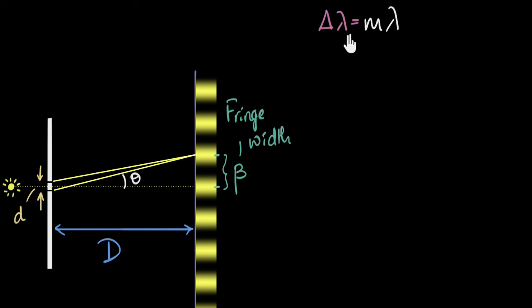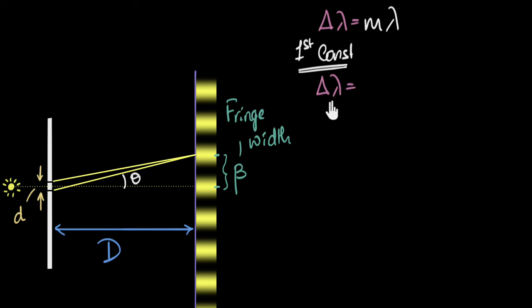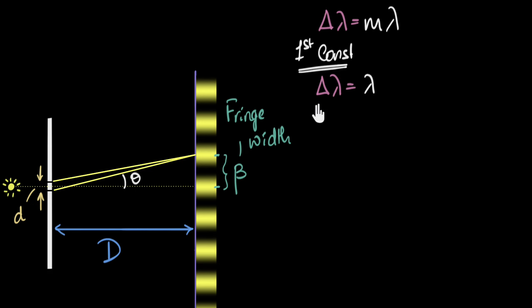When M equals zero, we get the path difference to be zero, and that happens right at the center — we get the central bright spot. When M equals one, we get the first constructive interference. When M equals two, we get the second. Since we're interested in the first constructive interference, we put M equals one. So the path difference is exactly equal to one lambda. Now, the path difference does depend on the angle — if the angle was zero, we get zero path difference, but as the angle increases, the lower wave has to travel more distance. So there is a relationship between them.